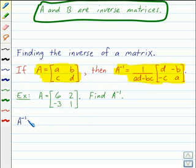So to find A inverse, we need to write 1 over the product of A times D, which is 6 times 1, minus the product of B times C, 2 times negative 3.